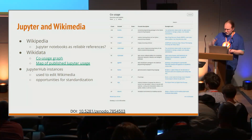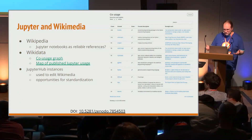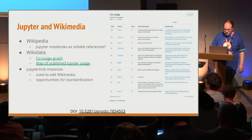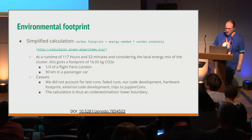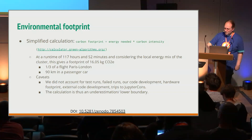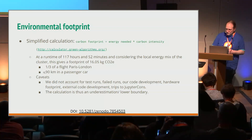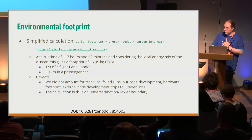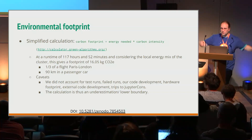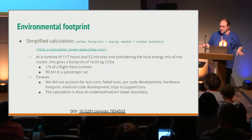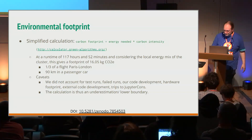We tried to capture the environmental footprint. The run documented in the preprint took 117 hours and 52 minutes, with a carbon footprint equivalent to a 90-kilometer drive in a passenger car, or one-third of a flight from here to London. However, we didn't account for test runs, failed runs, our own code development, hardware, external code development and libraries, or trips to JupyterCon. The calculation is an underestimate, but we encourage everyone to keep this in mind and include it in how you report about Jupyter.